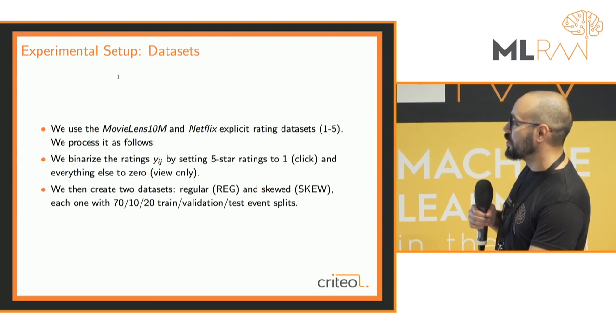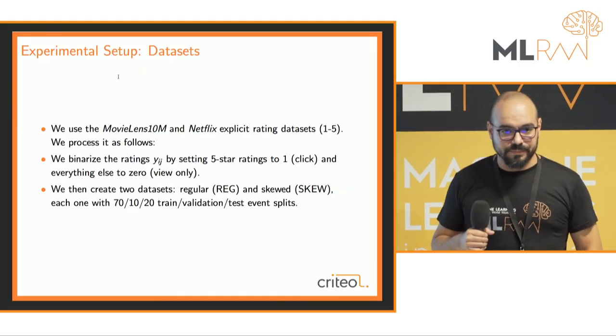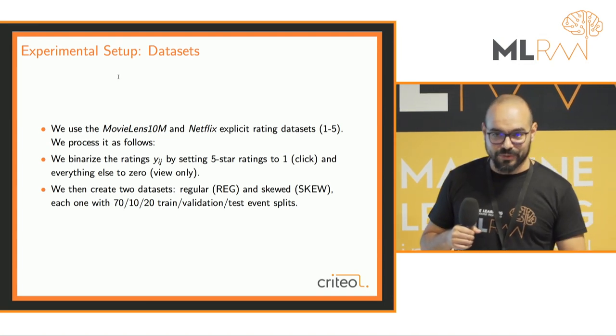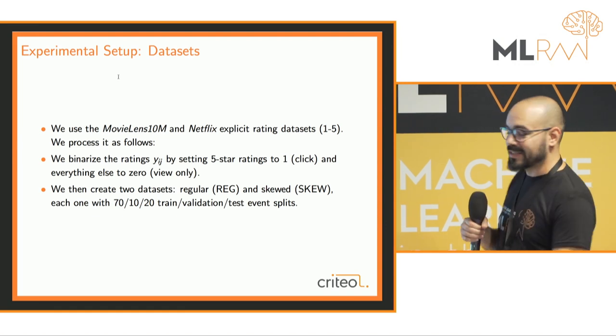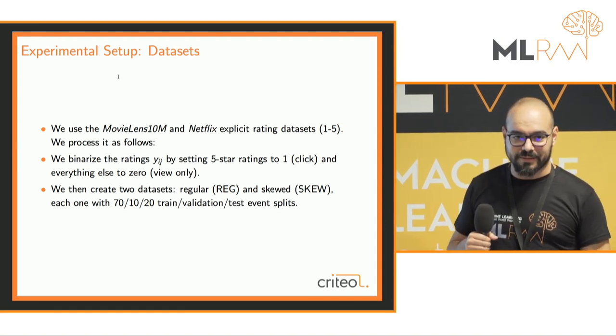Question from audience: we always distinguish explicit versus implicit feedback. In the case of Netflix or music databases, it's explicit feedback. We preprocess it into implicit feedback — five-star ratings are treated as positives. As for internal production testing, it's not yet there. We've only tried it on open datasets so far and want to bring it back internally.